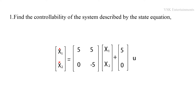Problems on the concept of controllability and observability are very simple but very important from a GATE point of view. Coming to the first problem: find the controllability of a system described by the state equation. By using this state equation, we are going to test whether the given system is controllable or not.